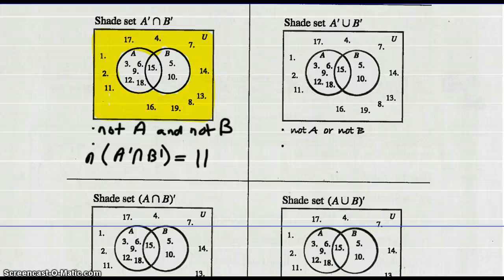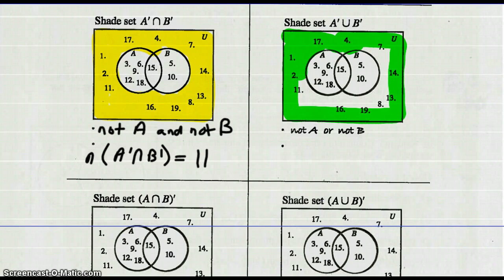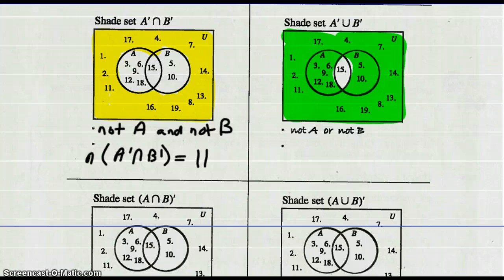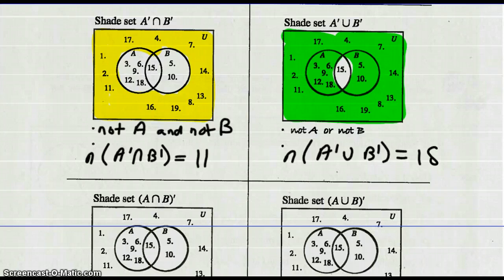Let's shade not A unioned with not B. All things that are not A — let's do that first; all things that are not A look like this. Union means or, then all things that are not B. So that's the shading for not A unioned with not B. Not A, not B — number of elements in not A unioned with not B would be all but one, so 18.